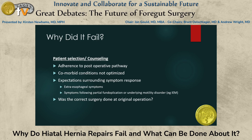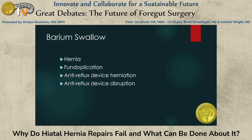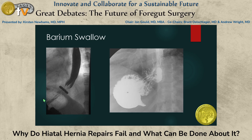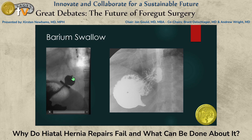To answer these questions, a thoughtful evaluation is needed. A simple step is a barium swallow — you can see a recurrent hernia, delayed esophageal emptying, subjective reflux, a disrupted anti-reflux device, or a migrated device. Here we have evidence of a herniated device with distal migration, with the LES noted superiorly. Another barium swallow shows a herniated, unfurling fundoplication migrated into the thoracic space.